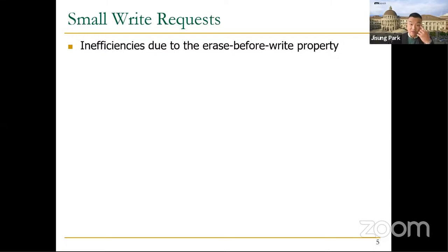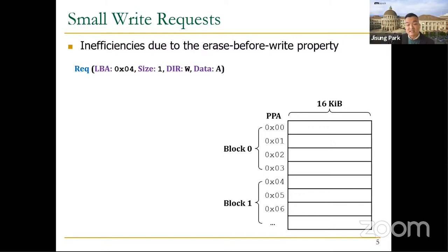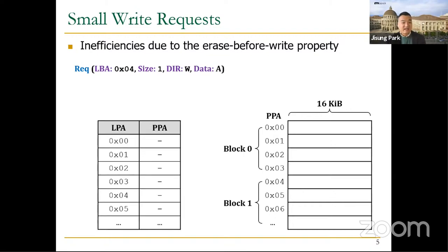So in modern NAND flash-based storage systems, there is quite a large I/O unit mismatch between the operating system and underlying NAND flash chips, which can significantly affect the performance and lifetime of a storage system. Let's dive into the problems this I/O unit mismatch introduces, combined with the erase-before-write property of NAND flash memory. Suppose a host I/O request to write a 4 kilobyte data A to logical block address 4, where the logical block size is 4 kilobytes while the page size is 16 kilobytes. An FTL needs to maintain logical-to-physical mappings to service future read requests. Let's assume the FTL employs page-level mapping, where the mapping granularity is exactly the same as the page size.